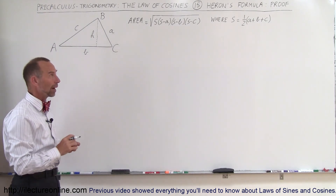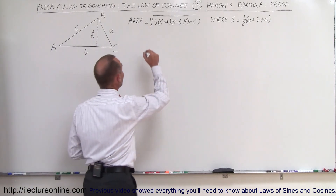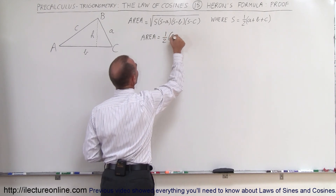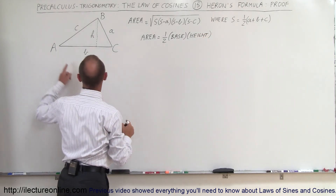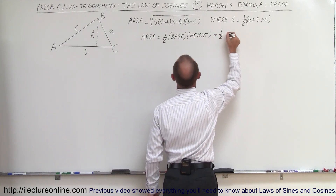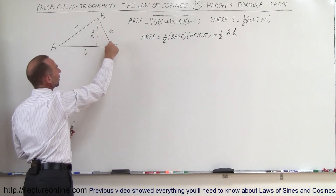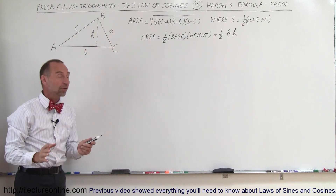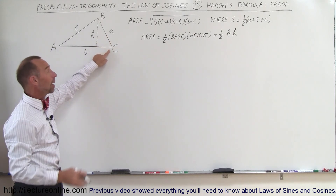How do we prove that that's correct? Let's start with the more fundamental way of finding the area of a triangle. We know that the area can be expressed as one-half the base times the height. The base is b and the height is h, so this equals one-half b times h. Looking at the right triangle, h is opposite angle c and a is the hypotenuse, so h equals a times the sine of c.